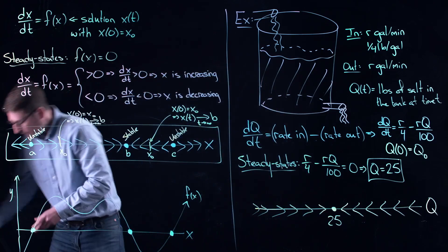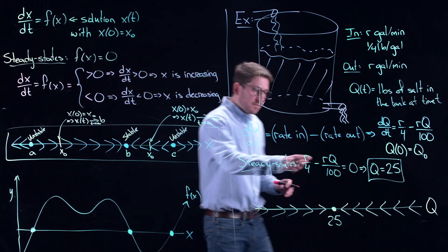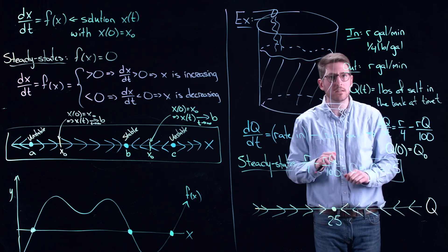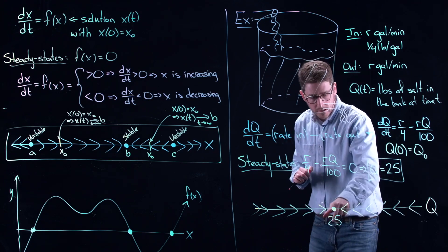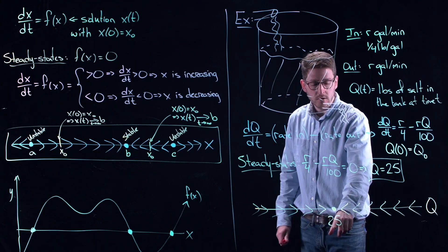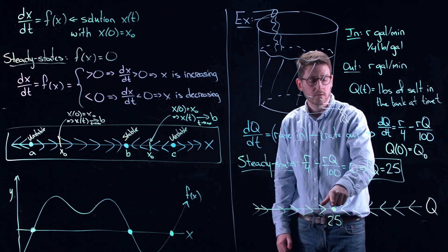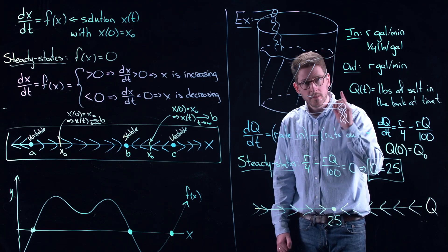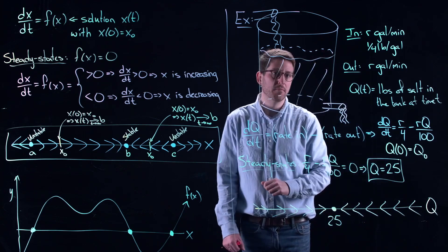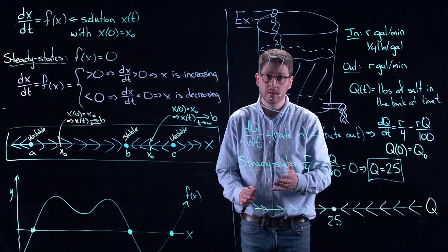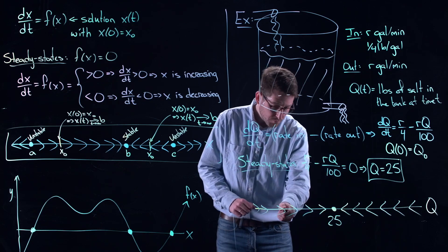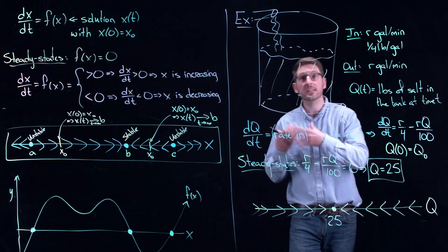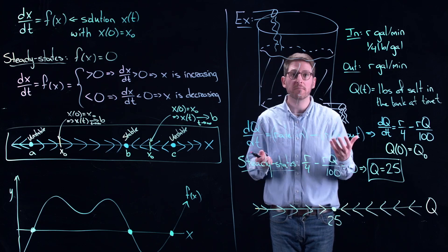So we can put this all together and we can read that phase line diagram like an English sentence. I would say, if I start with 25 pounds of salt, I will never change the amount of salt that is in the tank. You have a perfect balance between rate in and rate out. Then, if I start with less than 25 pounds of salt in the tank, well then by these flow lines, I'm going to continue increasing until I asymptotically, so as t goes to infinity, reach 25 pounds of salt.